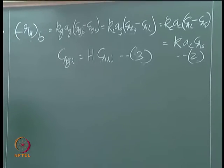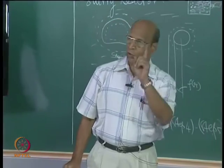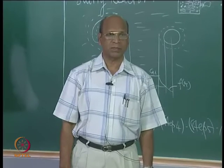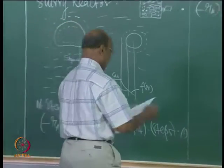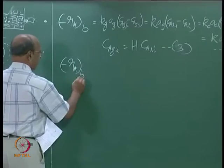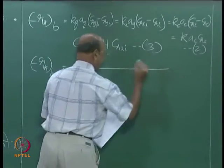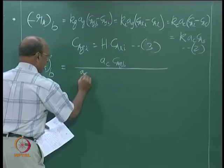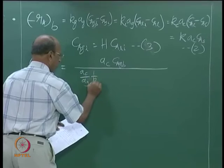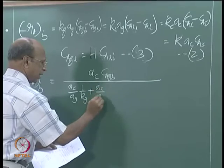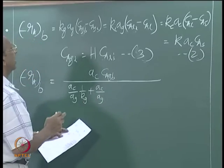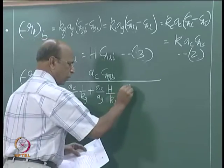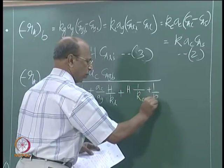I will leave that derivation to you - I may give it in the examination. The final expression is: minus R_AB equals C_AgB divided by [A_c/A_g times (1/K_g) plus A_c/A_g times H/K_L plus H times (1/K_c + 1/K)]. This is equation 4.